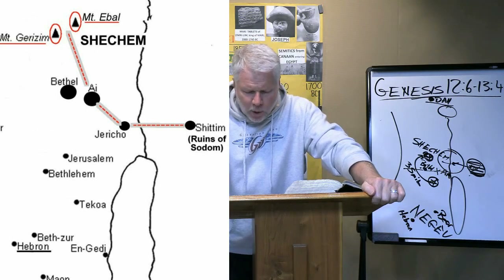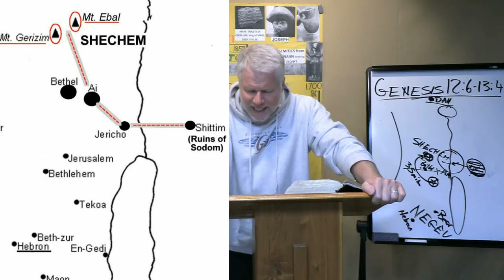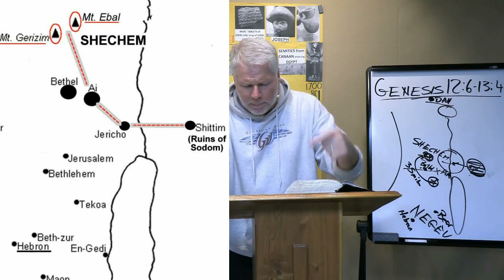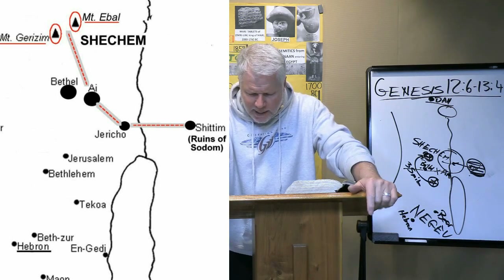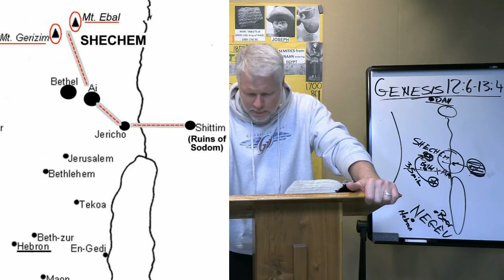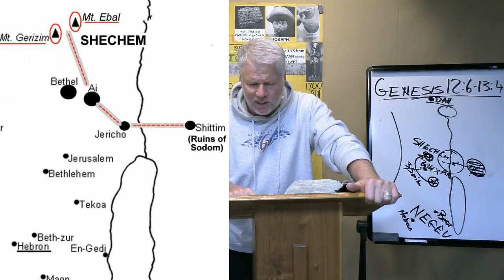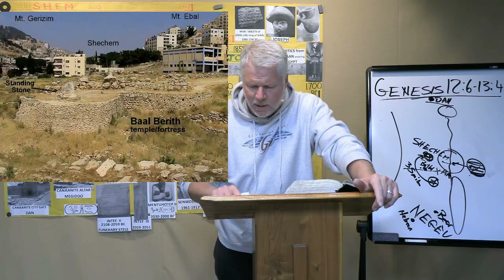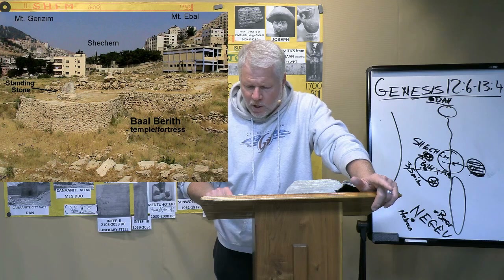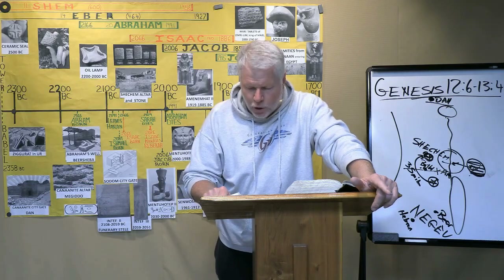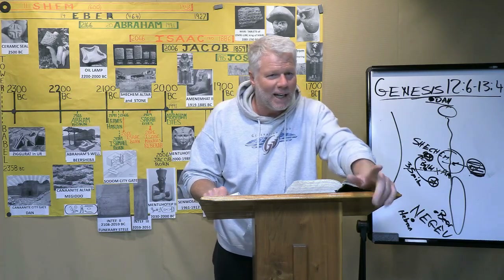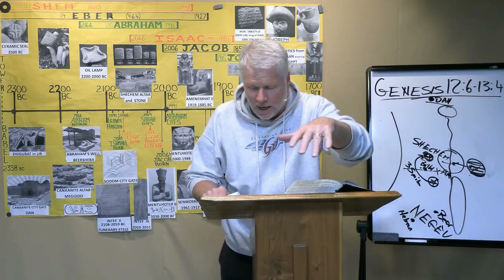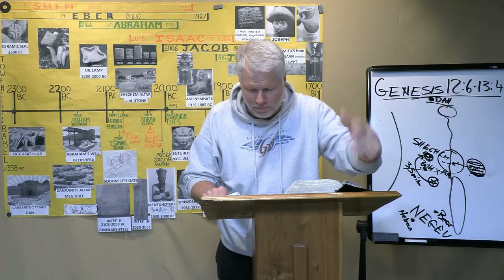From that point, Moses in Deuteronomy says to the people: 'When the Lord your God brings you into the land you are entering to take possession of it, you shall set the blessing on Mount Gerizim and the curse on Mount Ebal.' Mount Gerizim is the blessing, Mount Ebal is the curse. 'Are they not beyond the Jordan...'